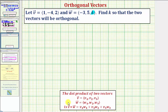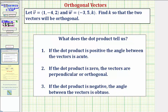The dot product tells us about the angle between two vectors. If the dot product is positive, the angle is acute. If the dot product is zero, the vectors are perpendicular or orthogonal. If the dot product is negative, the angle is obtuse.